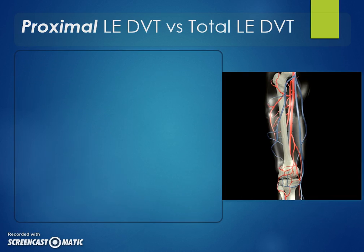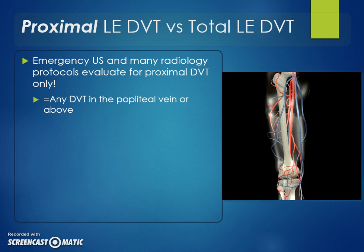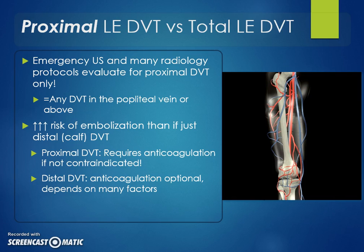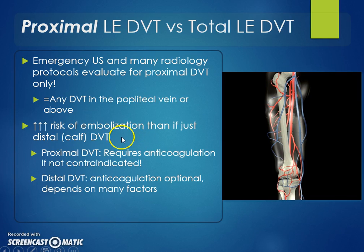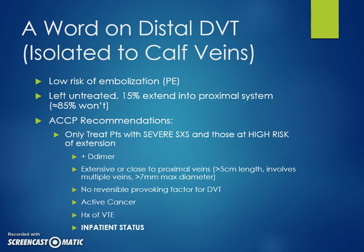When talking about proximal versus distal lower extremity DVT, proximal means anything in the popliteal vein or more proximally. Many radiology protocols only evaluate proximal DVT, and emergency ultrasound protocols similarly focus on the proximal portion, given the much higher risk of embolization compared to calf veins. Proximal DVT requires anticoagulation unless contraindicated. Distal DVT anticoagulation is optional and depends on factors such as severity of illness, extensive clot burden, or inpatient setting.